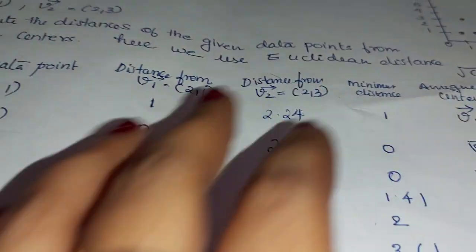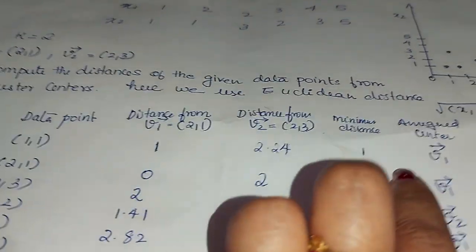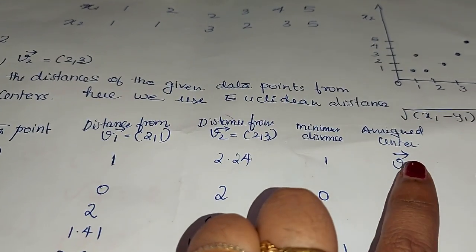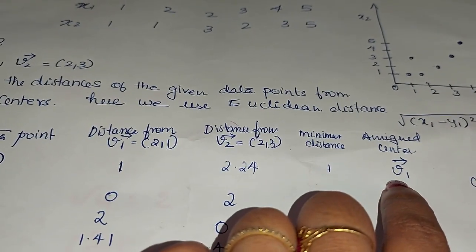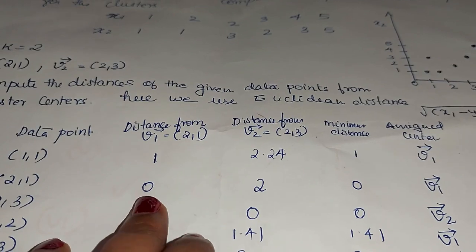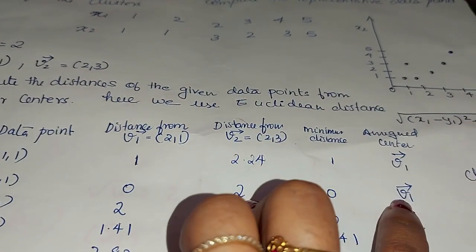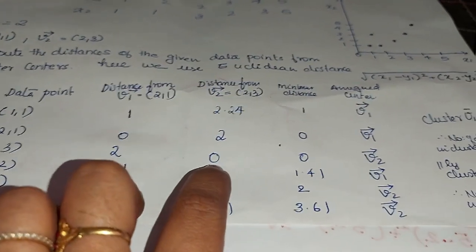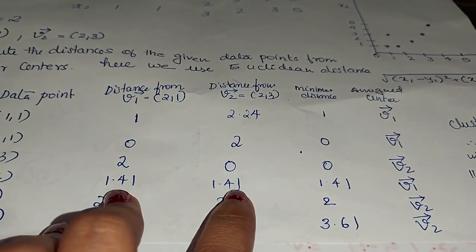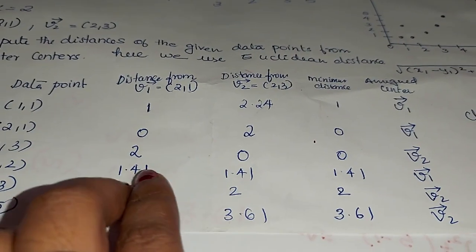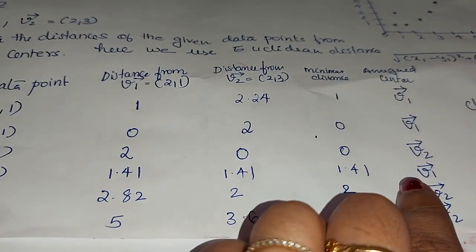Next column is minimum distance. We check which distance is smaller for each point. For x1: minimum is 1 from v1. For x2: minimum is 0, found at v1. For x3: minimum is 0 at v2; if both distances are equal, we take the first center v1. For x4: minimum is 1.41, smaller value is from v2, so assigned to v2. For x5: minimum is 2.82 vs 2, minimum is 2 from v2. For x6: 5 vs 3.61, minimum is 3.61 from v2.